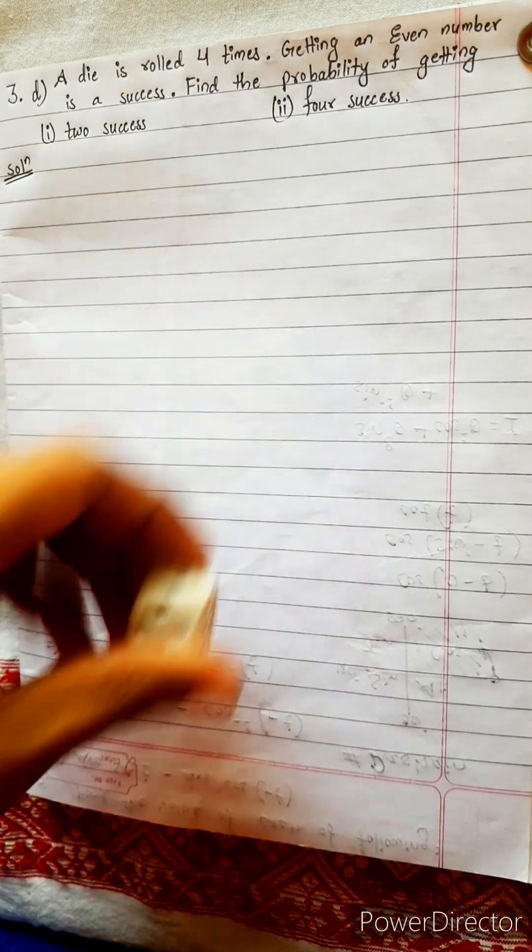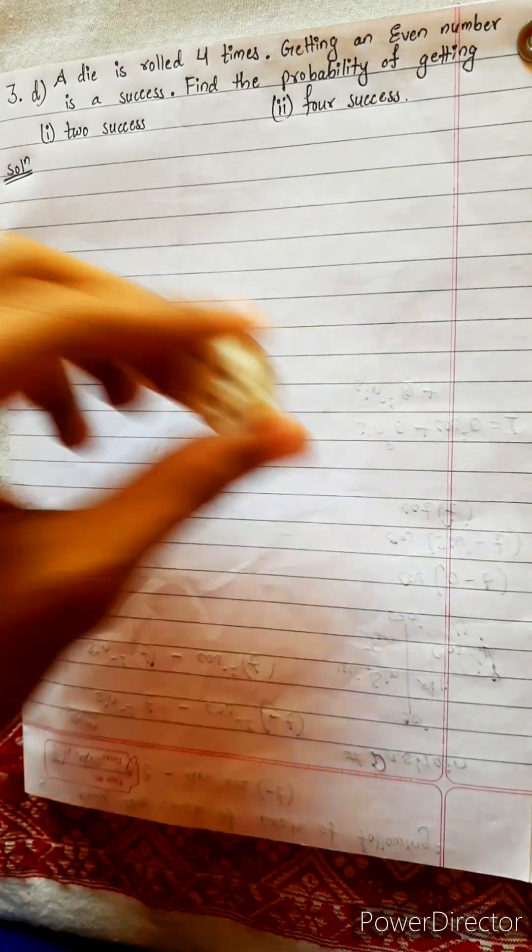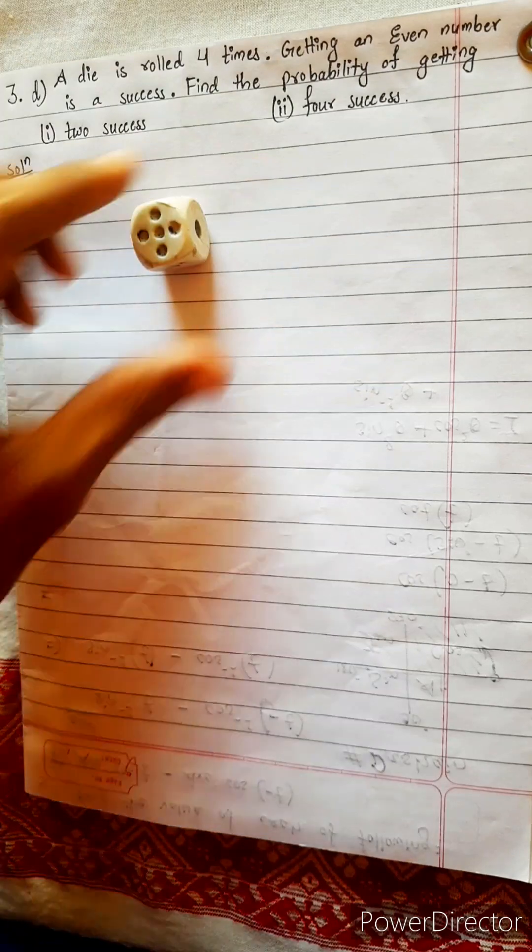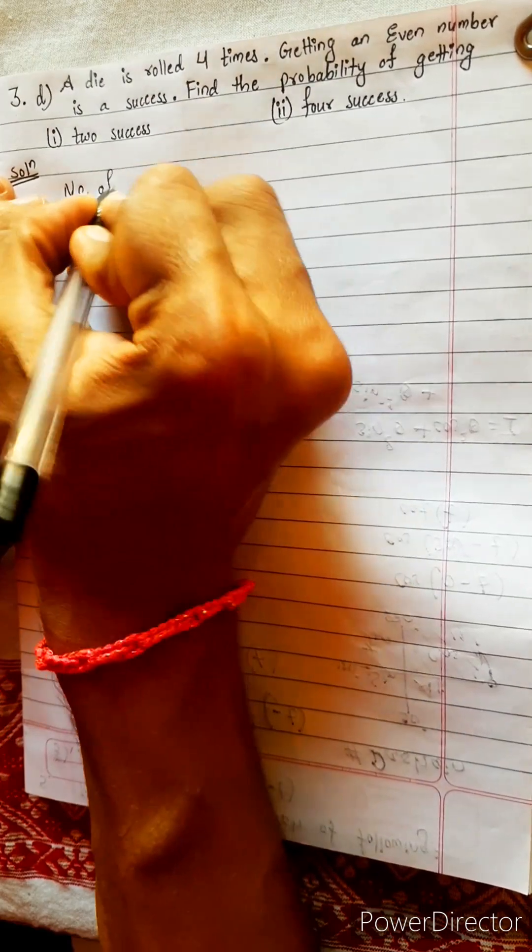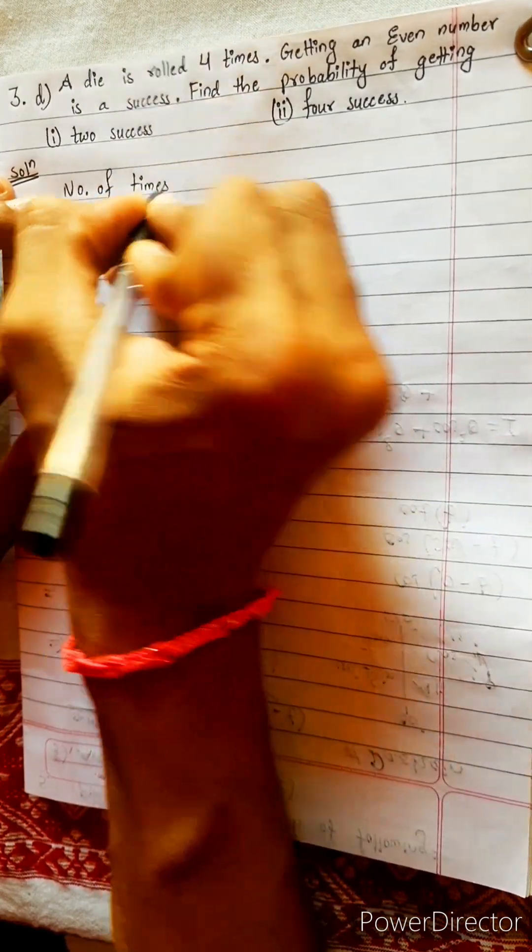A die means dice. It is rolled four times: one time, two time, three time, four times. Getting an even number is a success. Let's write given number of times an experiment is repeated.